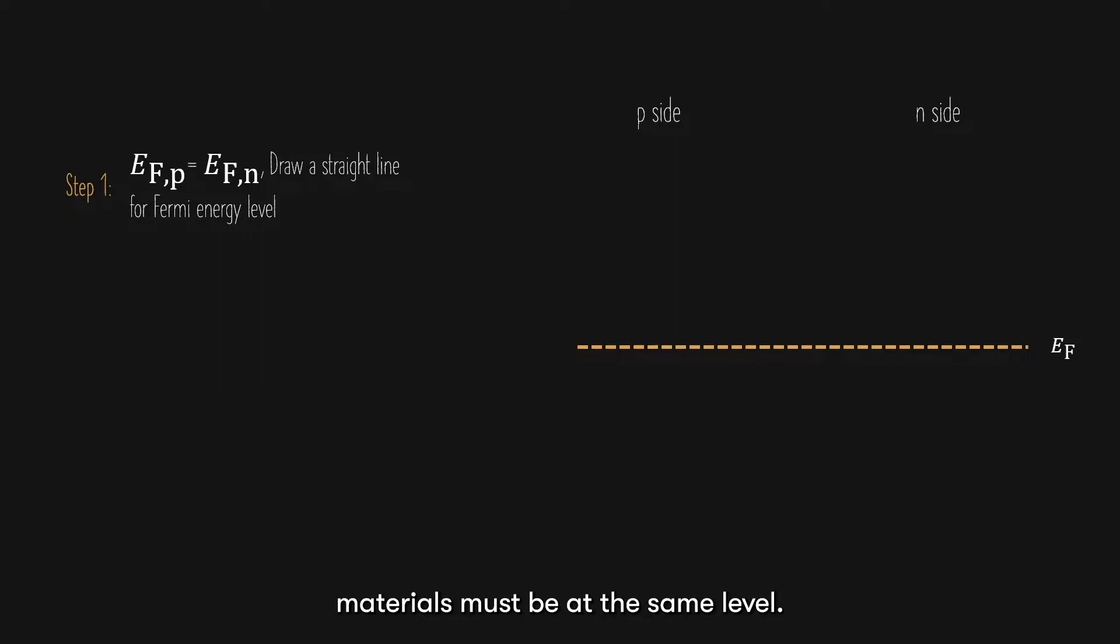We usually follow a simple process to draw the energy band diagram of p-n junctions. First, in equilibrium, which means when current is not flowing, the Fermi level for both p- and n-type materials must be at the same level. So, we start with the Fermi level as a straight line.